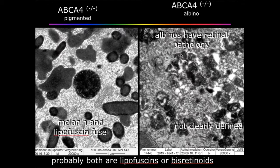The situation is completely different in albino ABCA4 knockout mice. They have the same genetic defect, but they don't have melanosomes. You can see directly the difference here. These lipofuscin granules look completely different — they have lost membranes.